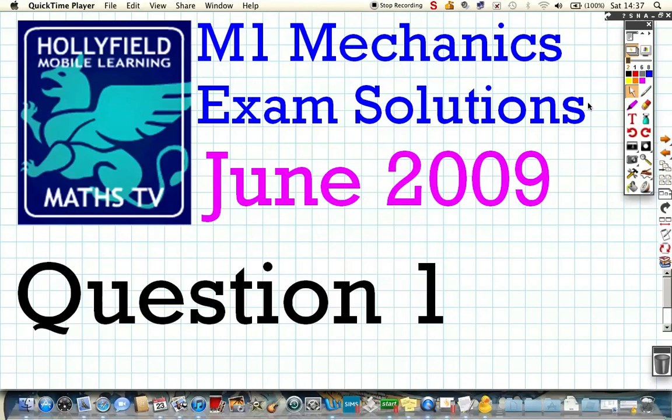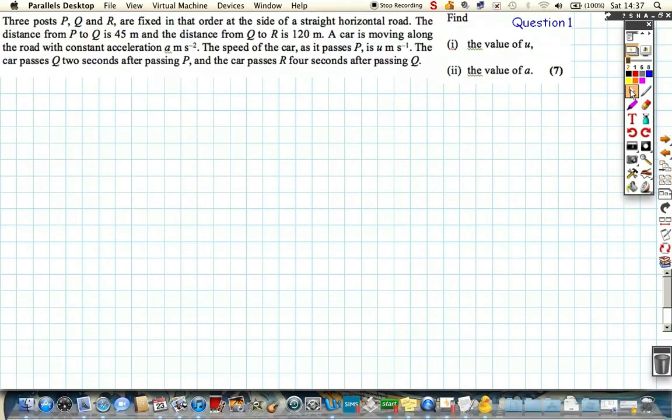Okay, June 2009, question one on the M1 paper looks something like this. So we've got three posts on a road and various distances. Let's just get a quick little diagram to get ourselves oriented on what we're doing.